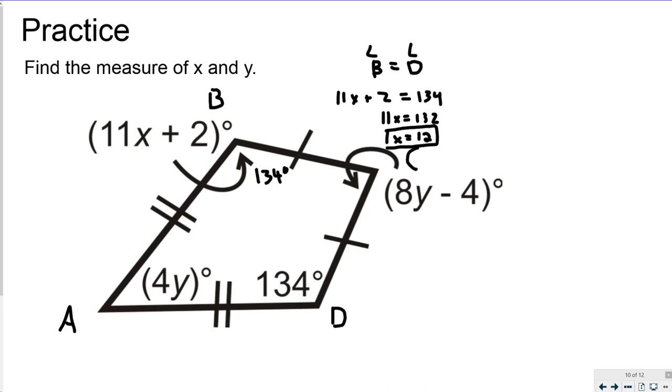So now, I can use the property that all of the angles in this triangle, or in this quadrilateral, must equal 360. So I'm going to write an equation. Angle A for Y, plus angle B, which I now know to measure 134 degrees, plus angle C, so that's A, that's B, angle C is 8Y minus 4, plus 134, has to sum to 360 degrees.